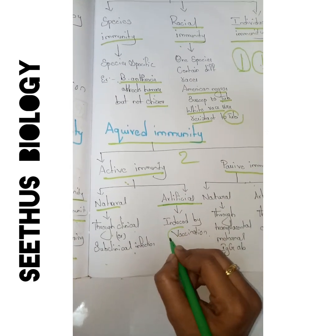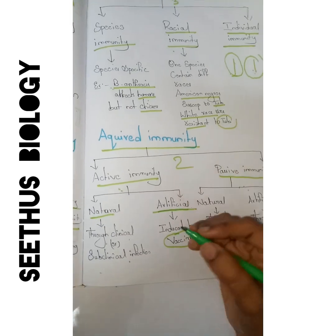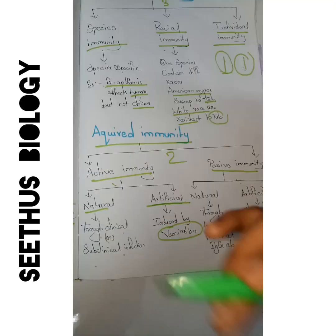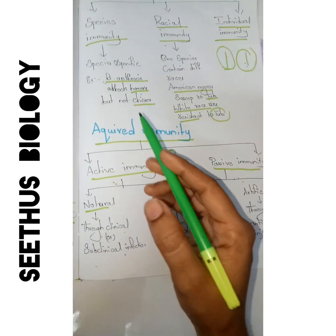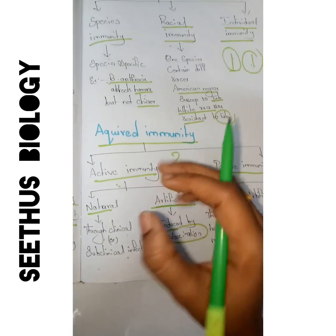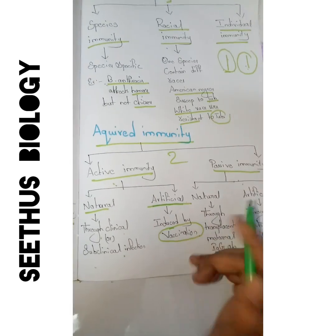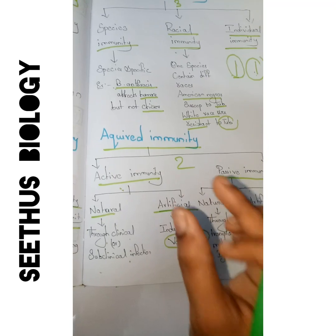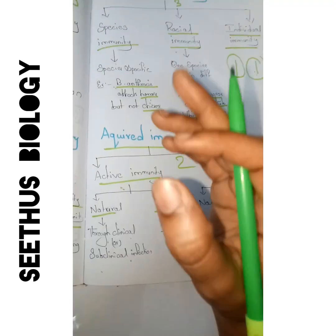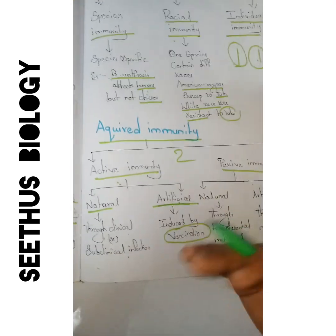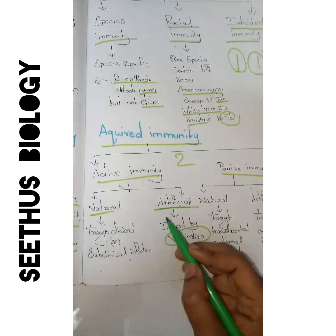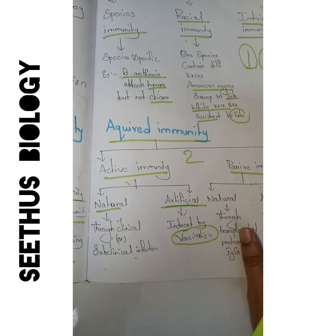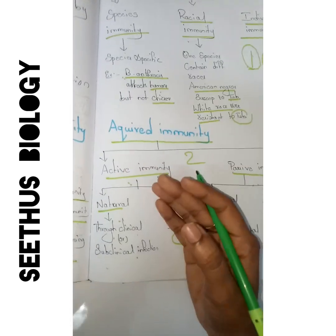Artificial active immunity means we are inducing vaccination. For example, Bacillus anthracis causes anthrax disease. We prepare a vaccine from Bacillus anthracis by taking the antigen and killing it, then preparing the vaccine, which is introduced into the host body. It does not cause infection but acts as an antigen. The body recognizes the antigen, produces antibodies, and immunity is built up. This is how artificial active immunity works.